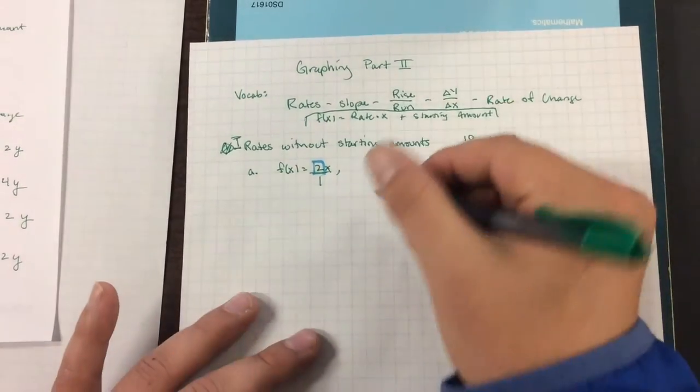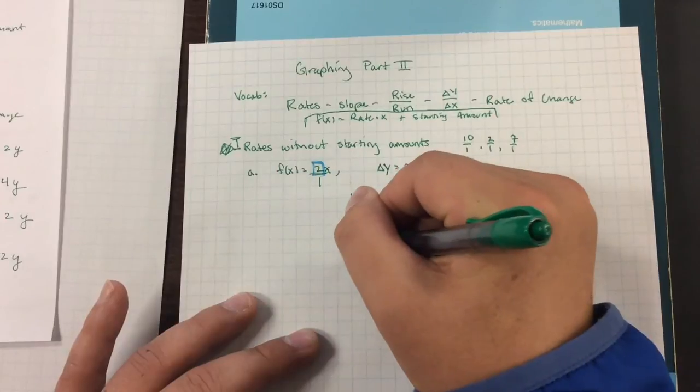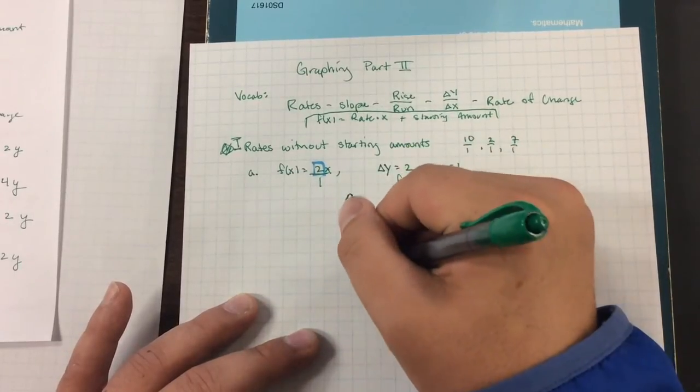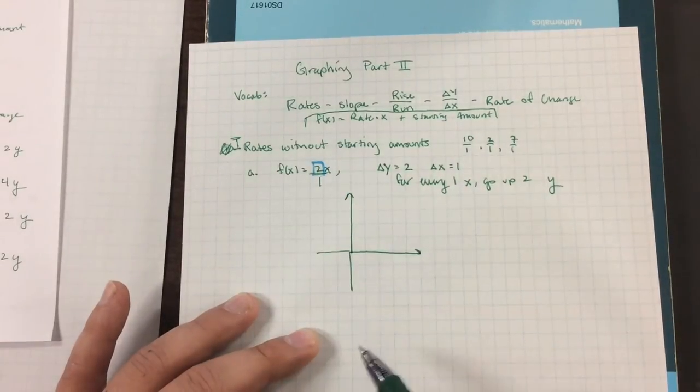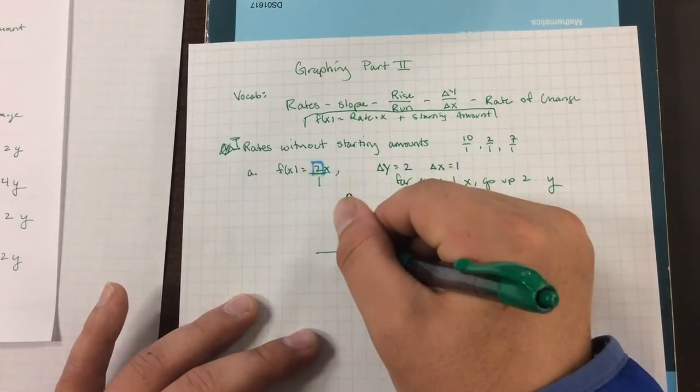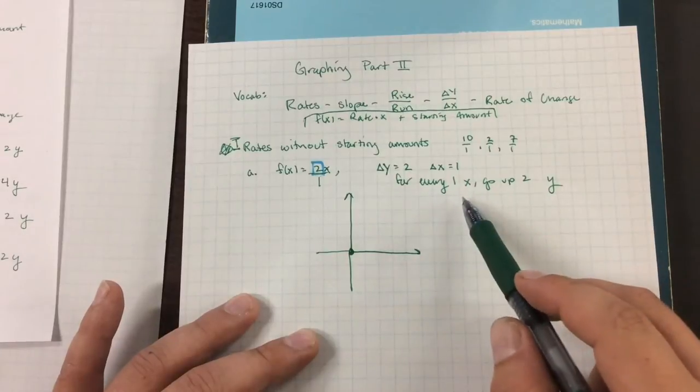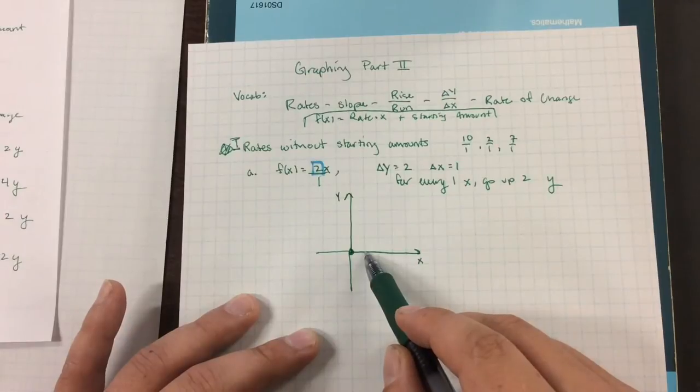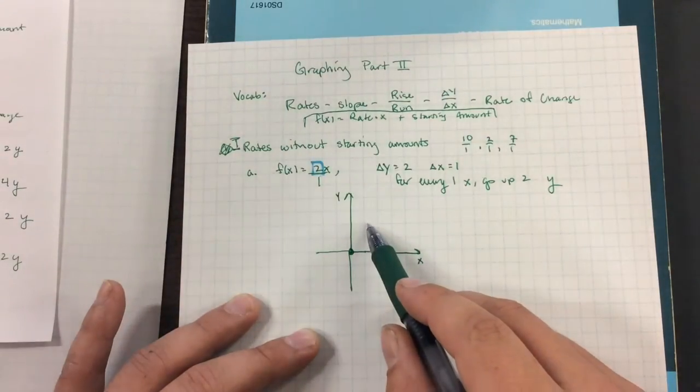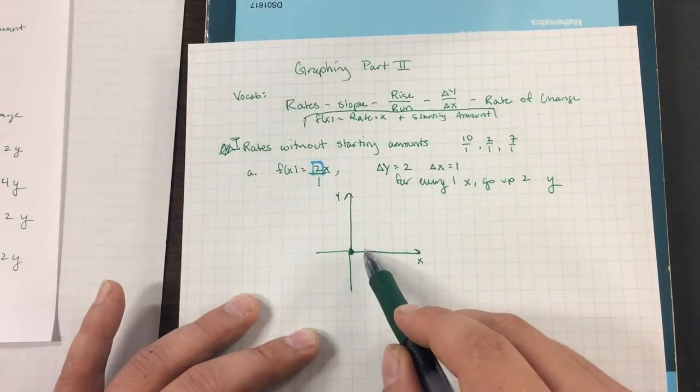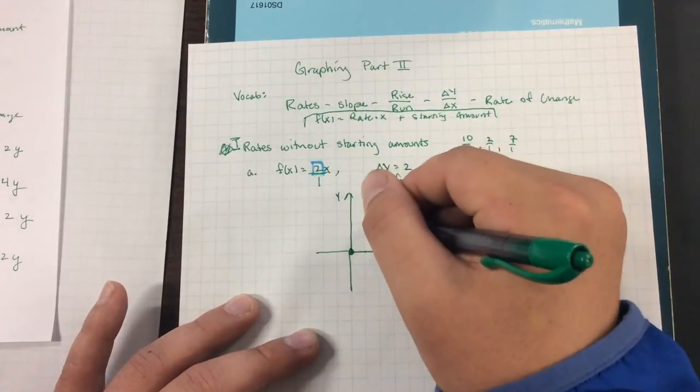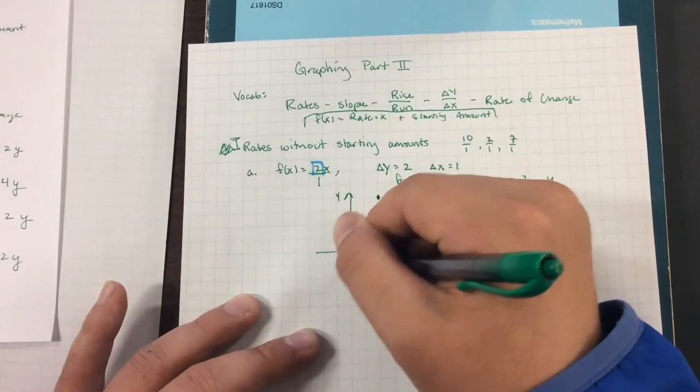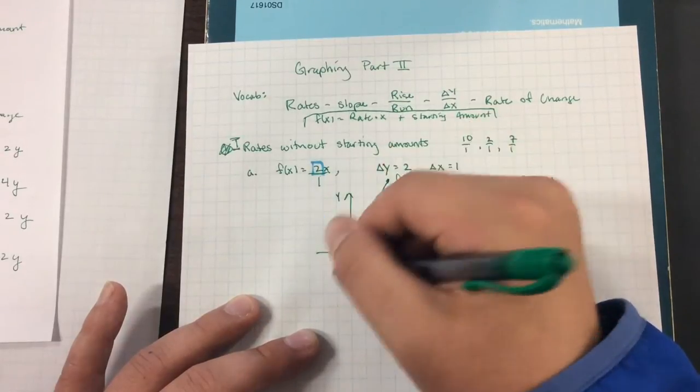So let's go ahead and graph this. There is no starting amount here. So the starting amount is 0 if there's no starting amount. And it says that for every x I go over, I'm going to go up 2y's. So I'm going to go over 1x and then up 2y's, and I'm going to put a point. And then I'll go over 1x and up 2y's. And now I have this nice line right here.